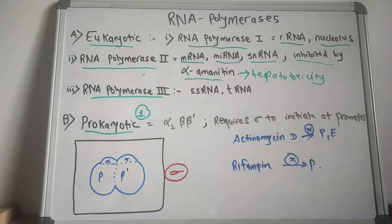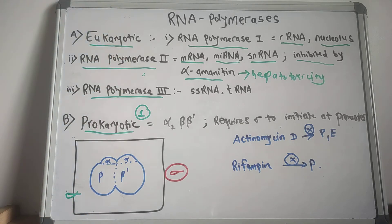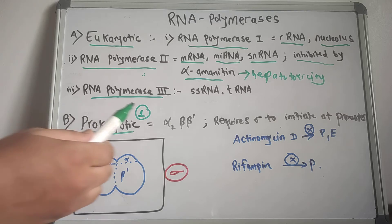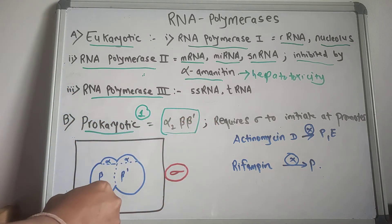The prokaryotic RNA polymerase is composed of alpha-2, beta, and beta prime subunits. The RNA polymerase of the prokaryotic organism is a complex holoenzyme. The core enzyme consists of alpha-2, beta, and beta prime.